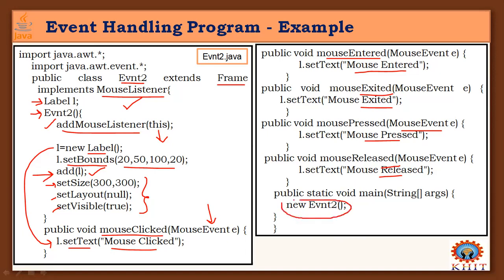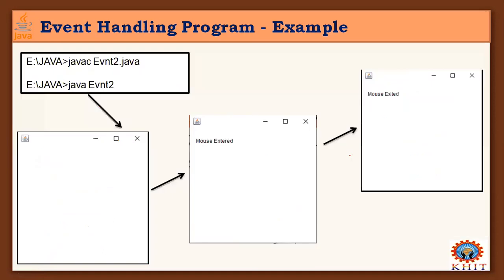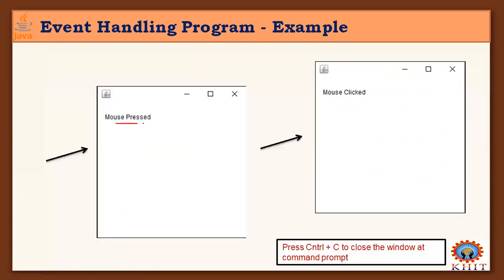All these operations execute when an object of this class is created. Compile as usual with javac and run using 'java EventTwo'. Initially you will get a blank window or box. When you enter the mouse into this area, a text message 'Mouse Entered' will display. When you exit the mouse from this area, 'Mouse Exited' will be displayed. When you press or click the mouse, it informs you accordingly. To close the window, press Control+C at the command prompt.